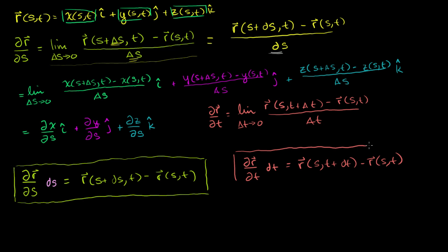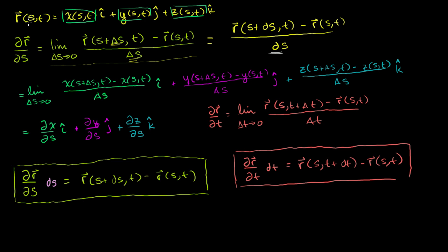So let's box these two results. In the next video, we're going to actually visualize what these mean. All I did was ask: what does it mean to take the derivative of this vector-valued function with respect to s or t? These two results are going to be very valuable for building the intuition for why surface integrals look the way they do.